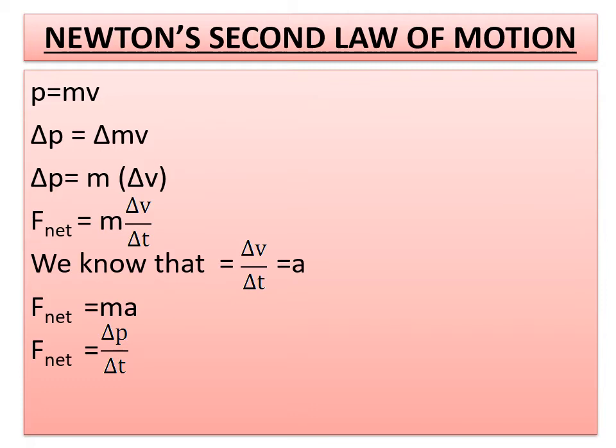Coming to our equation F_net is equal to delta P by delta T, in that, instead of substituting delta P as M times of delta V, F_net changes to M into delta V by delta T. We know delta V by delta T is equal to A. So I can write F_net is equal to M into A.